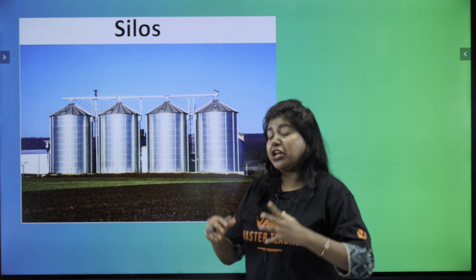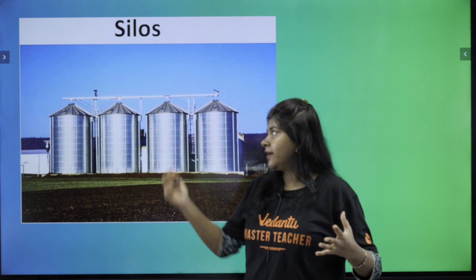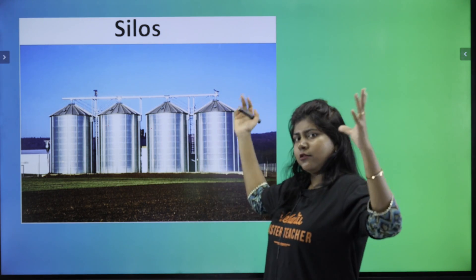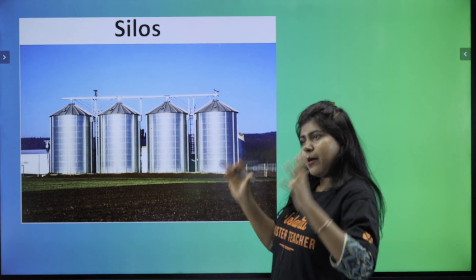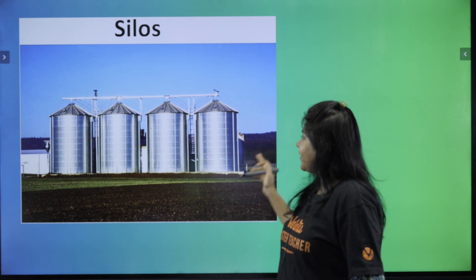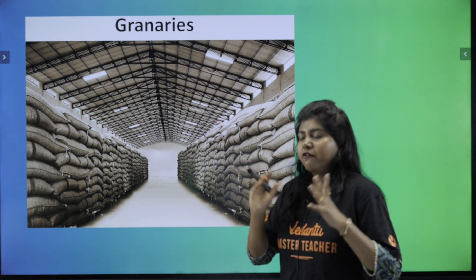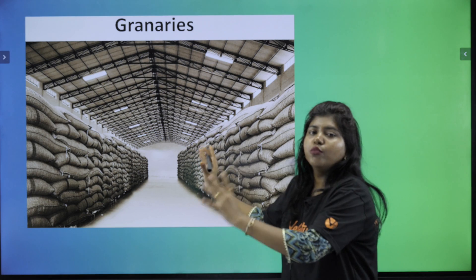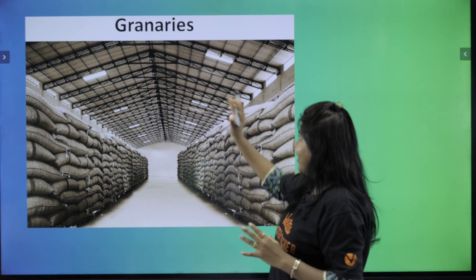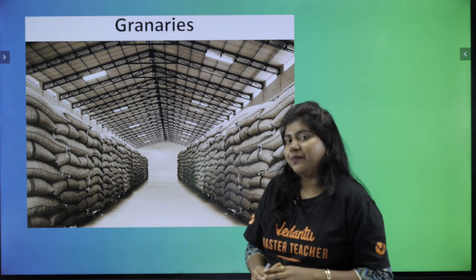Larger scale — that's why you store it in a large scale. A metallic tin is the same version. This is the metallic version; this is the bulk version. This is the granaries.